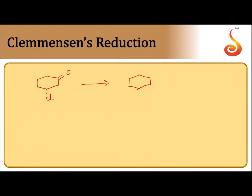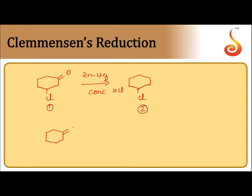For example, if I want to convert a chloro-carbonyl compound to chlorohexane — meaning the carbonyl group should be reduced to CH₂ but the Cl should not be affected — I should use zinc amalgam and concentrated HCl only. What happens if I use hydrazine and potassium hydroxide here?